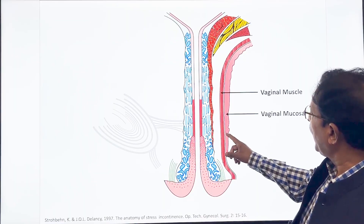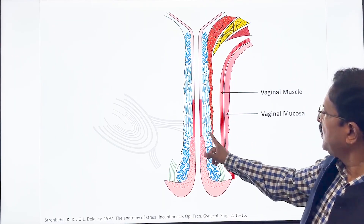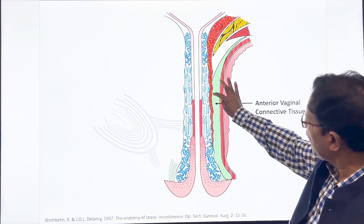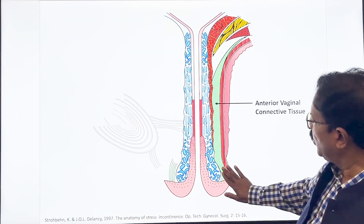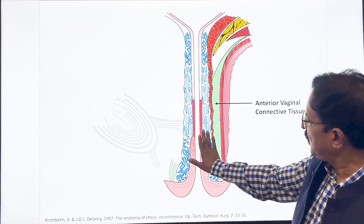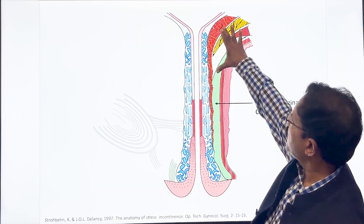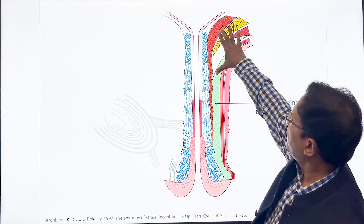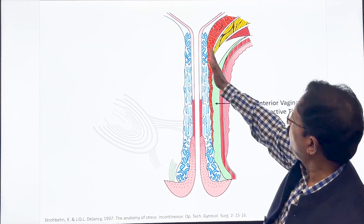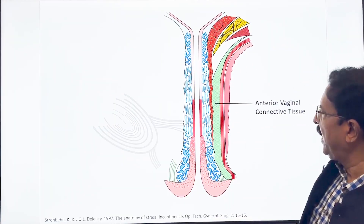Behind the raffae lies the vaginal muscle and vaginal mucosa, and these two layers are fused by thick connective tissue — there is no space. In the distal two-thirds, the urethral wall is fused to the vaginal wall by connective tissue. It is only in the proximal one-fourth that there is some loose space which can be dissected, but the rest is very adherent.